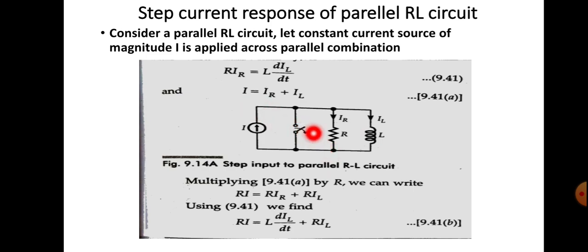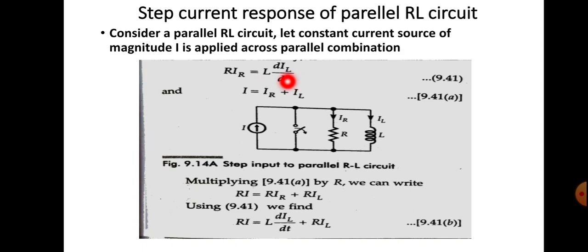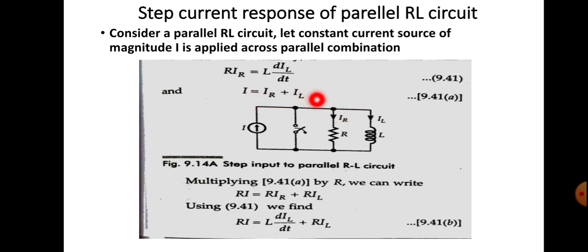So we can write the voltage drop across R, which is equal to current into resistance — that is IR into R. The voltage drop across the inductor is L into dIL/dt. So we can equate these because they are parallel paths. Similarly we can apply the KCL rule in the case of parallel circuits. Incoming current will be equal to outgoing current. Here the incoming current is I and outgoing current is IR and IL, so I will be equal to IR plus IL. These are the basic equations.